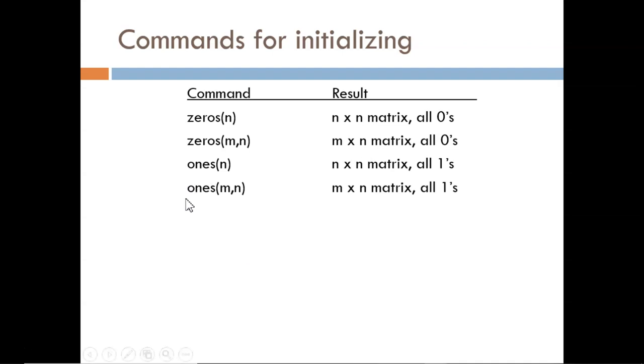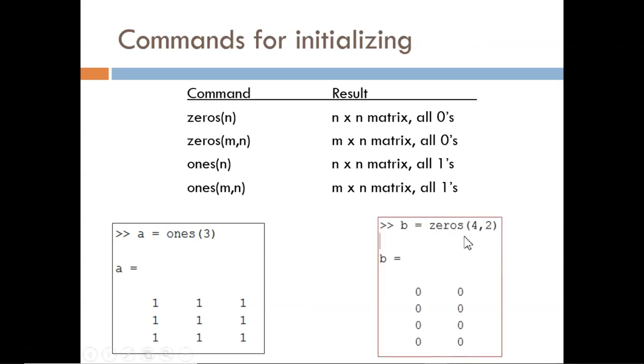Here's an example of the ones command used to create a 3x3 matrix of all ones. Since it is a square matrix, only a single size number is needed. And here's an example of the zeros command used to create a 4x2 matrix of all zeros.